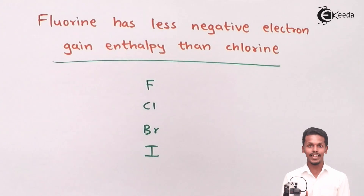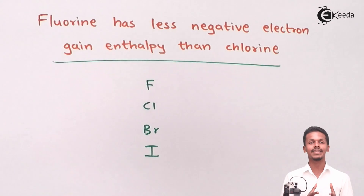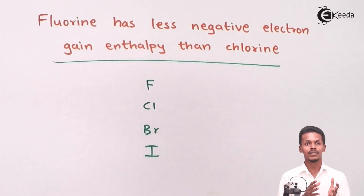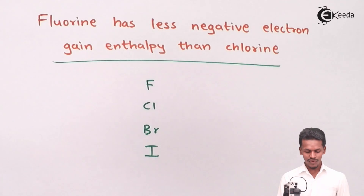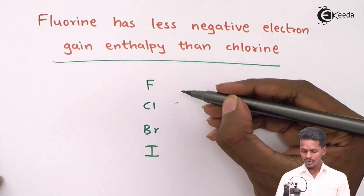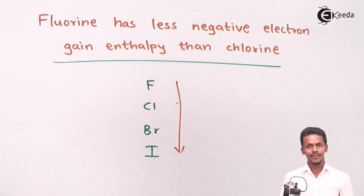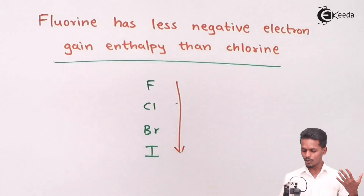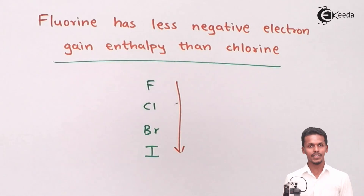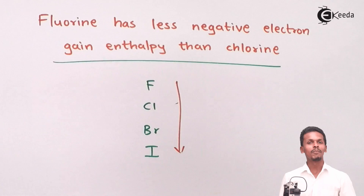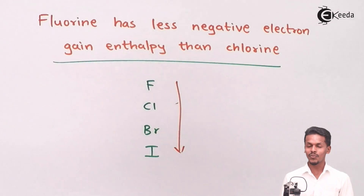Since we have a question about fluorine and chlorine, which belong to the same group, we will take the help of what we studied in the previous lecture. We studied that as you move down the group, the atomic number goes on increasing. If the atomic number increases, the atomic size also goes on increasing, and if the atomic size increases, that leads to a decrease in the effective nuclear charge, because of which the electron gain enthalpy will also decrease.